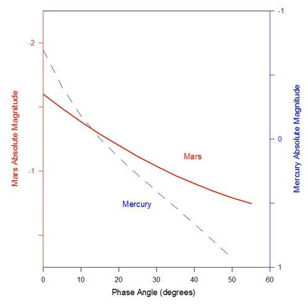In astronomy, a phase curve describes the brightness of a reflecting body as a function of its phase angle. The brightness usually refers to the object's absolute magnitude, which in turn is its apparent magnitude at a distance of one astronomical unit from the Earth and Sun.